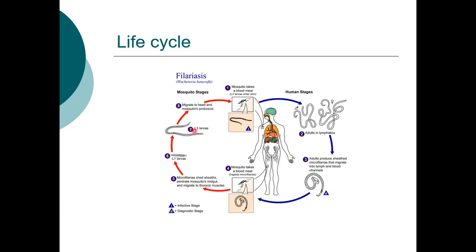Once the microfilariae develop to larval stage three, they migrate to the proboscis — the mouth — of the mosquito, moving to the salivary glands found on the proboscis. At this stage, all it needs is to bite another human being, and the life cycle continues in the human being. That is what happens with the life cycle of elephantiasis or lymphatic filariasis.